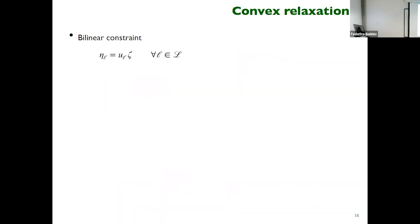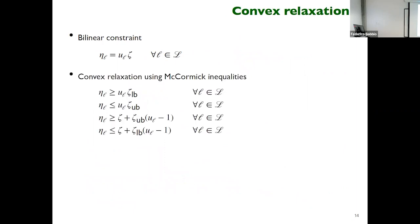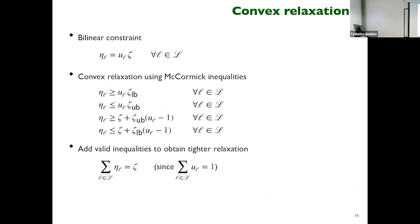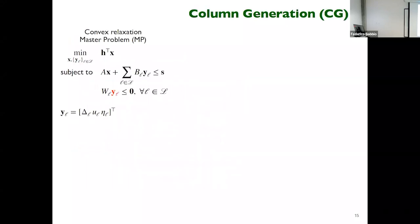To get a lower bound, we have a bilinear constraint. McCormick inequalities provide underestimators for this constraint. To get better convex relaxations, we add valid inequalities to obtain a tighter relaxation. This is the convex relaxation where some substitutions have been made to get it in compact form — Y_L is basically delta(L), U_L, eta_L as a vector.